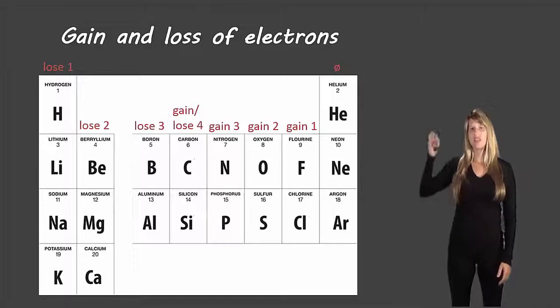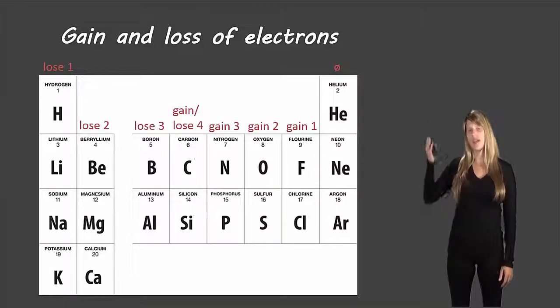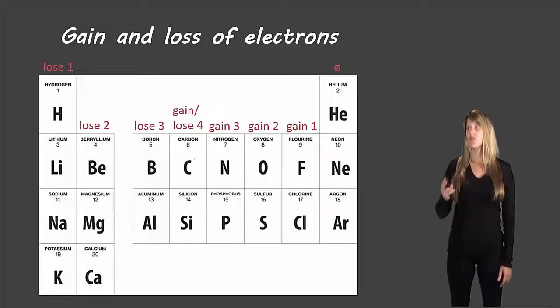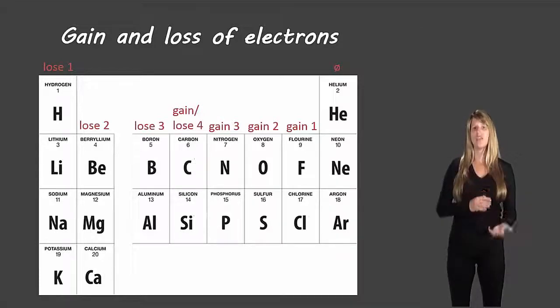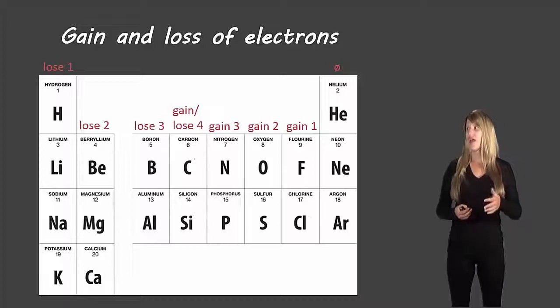So the pattern that we actually see is that everything in the first column is likely to lose that one valence electron, everything in the second column will lose two, the next one will lose three. When we get to the carbon family, it can either gain or lose four—it sort of goes either way because it's just as easy to gain four and just as easy to lose four.